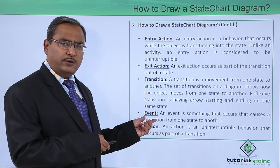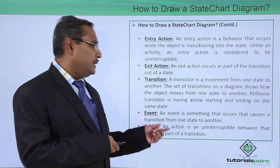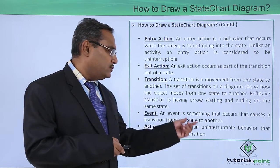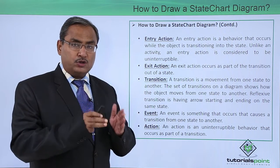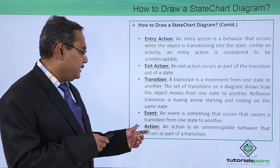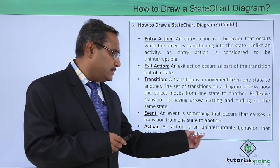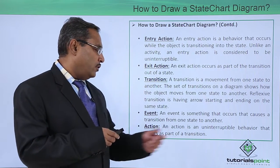Now let us go for the event. What is one event? An event is something that occurs that causes a transition from one state to another state. We know that state transition, the main cause behind the state transition is the occurrence of an event. Action. An action is an uninterruptible behavior that occurs as a part of a transition.